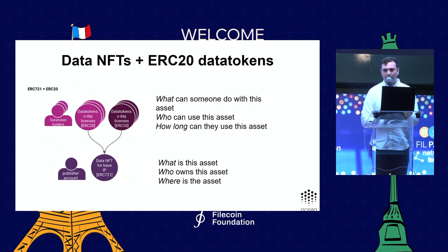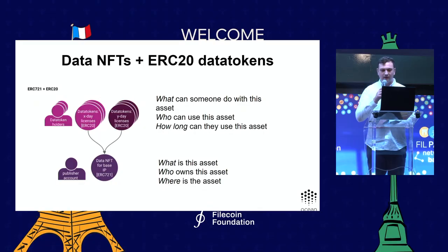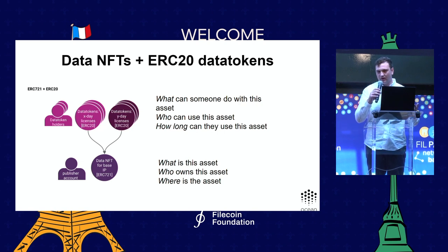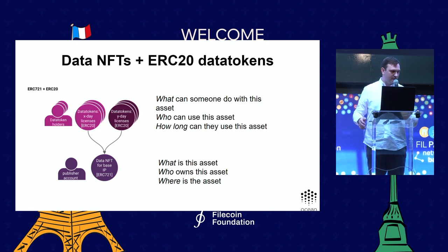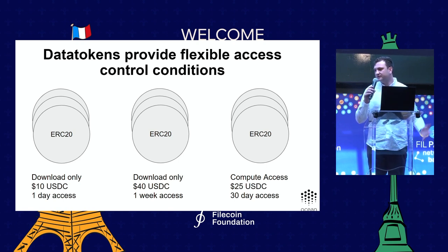Along with the data NFT structure, we also have the use of ERC-20s to allow for sharing access control to your dataset. We've chosen ERC-20s because of the ability to have flexible sub-licenses against the base IP. A data NFT represents your base IP ownership of an asset — describing who owns it and who is allowed to access it. You can then create different ERC-20s against that to share ownership and monetize it. For example, you might have one sub-license where someone is allowed to download your asset for one time or one day at one price, or allow for ongoing access at a different price.